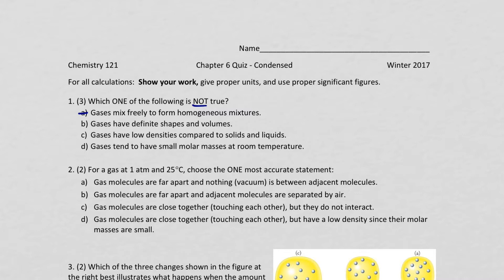Gases have definite shapes and volumes. Well, hold on. That's actually directly contradictory to what we just said. So we know that this is an answer possibility. C, gases have low densities. That's wrong. And D, gases tend to have small molar masses at room temperature. Yeah, no.